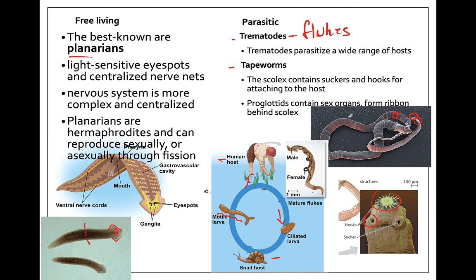Animals may pick up a tapeworm through contaminated water. Most humans in a first-world country are more likely to get a tapeworm from undercooked pork or beef. If a cow or pig is infected with a tapeworm, they can develop cysts in their muscle cells, and when you eat undercooked meat, those parasites can break out of their cysts and infect your body.